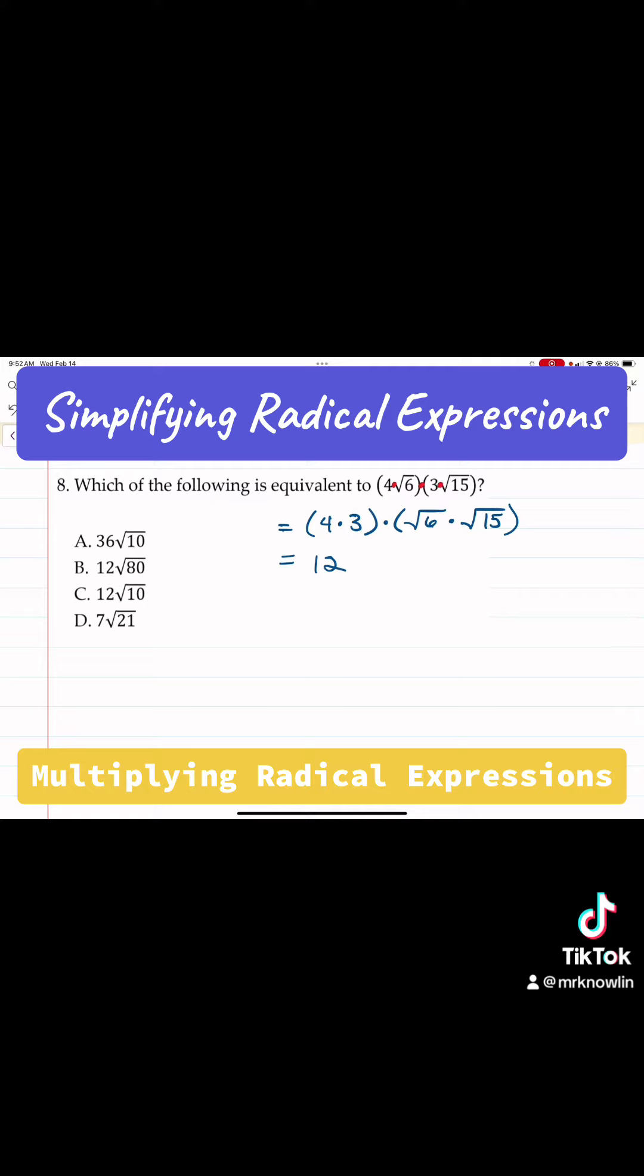It's not a perfect square and 15 is not a perfect square. So what I would do here is factor each one of these. And we're allowed to put all of that underneath one radical because they're both underneath the square root.